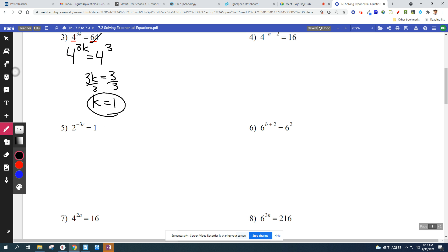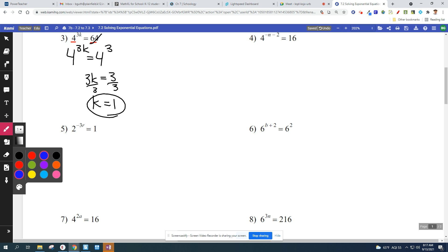So today's lesson is all about making a match. Number five, you've got a base 2 and a base 1. You've got a 2 and you've got a 1. And you want to try to make them match. Well, 1 could be written as 2 to the 0 power. That's tricky because you might not have thought of that or remembered that. But anything to the 0 power equals 1. So I can rewrite this as 2 to the negative 3r equals 2 to the 0.